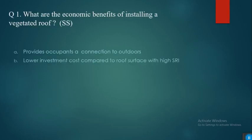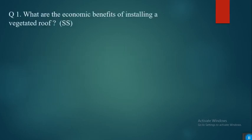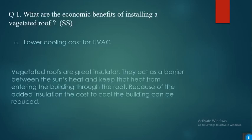The options are: option A, provides occupants a connection to outdoors; option B, lower investment cost compared to roof surface with high SRI; option C, increased habitat for birds; option D, lower cooling cost for HVAC. The answer is lower cooling cost for HVAC, because vegetated roofs are great insulators — they act as a barrier between the sun's heat and keep that heat from entering the building through the roof.